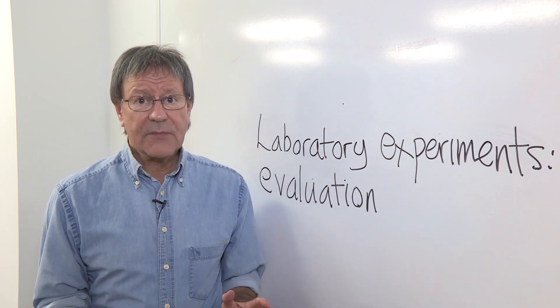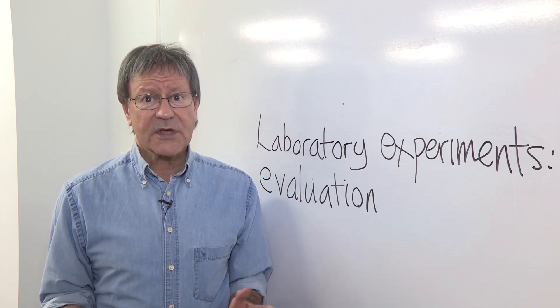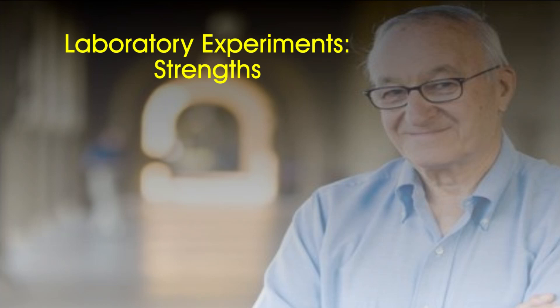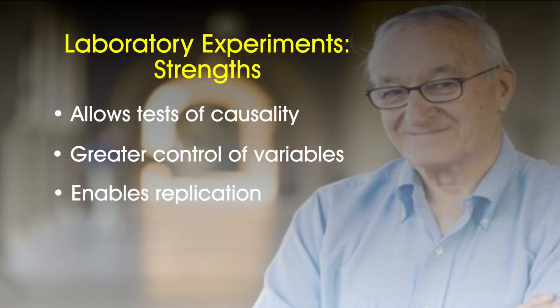Third, and really important, you'll need some good evaluation points. What do laboratory experiments give researchers that other methods don't? The major strength of the laboratory experiment is that it's the only method that allows the researcher to test and establish causality. It also allows for greater control of variables, increasing the likelihood that it's the independent variable producing the effect. Third, it's relatively easy to replicate — the laboratory experiment gives high reliability; you can do the test again under the same conditions and see if you get the same results. So the laboratory experiment has major strengths, and it's easy to see why it's so widely used in psychology.